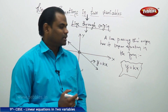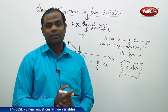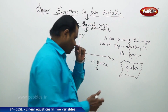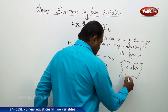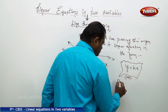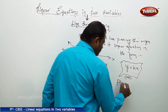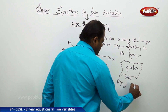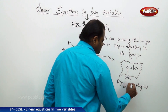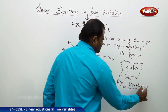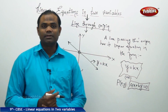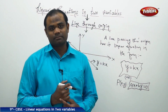A line passing through origin always has its linear equation in the form y is equal to kx. Or it can also be written in the form P(x, y): ax plus by equal to 0.